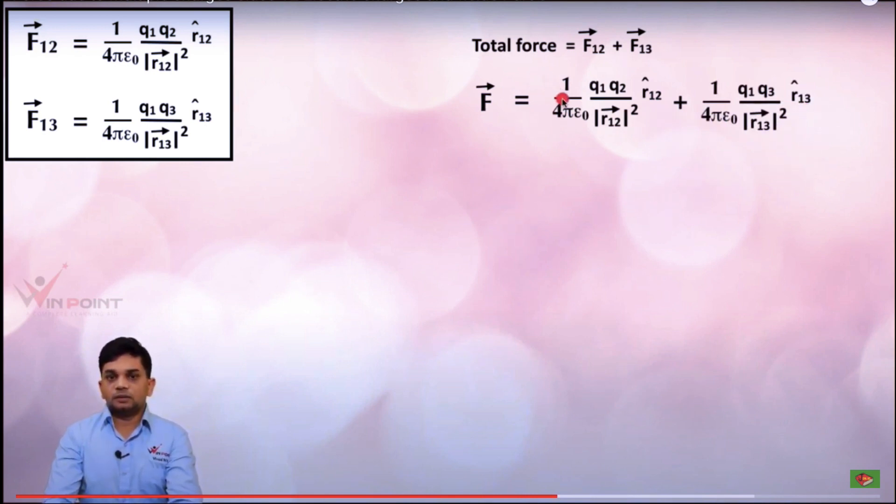Here you can see that 1 by 4 pi epsilon 0 appears in both terms and is common. So we can take it out. So it will be